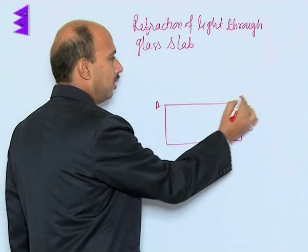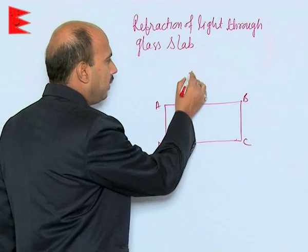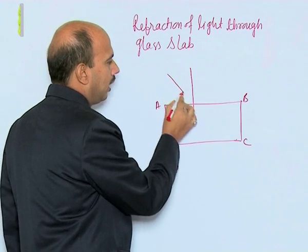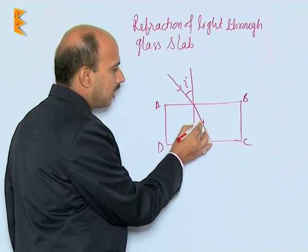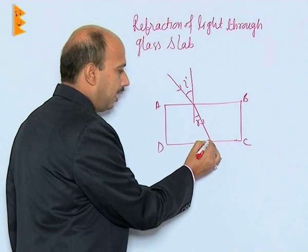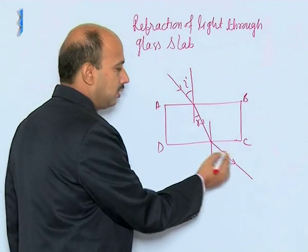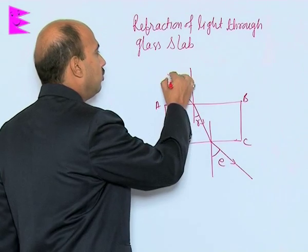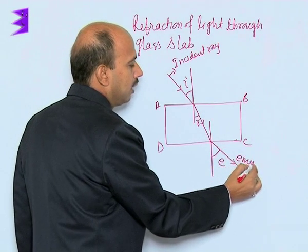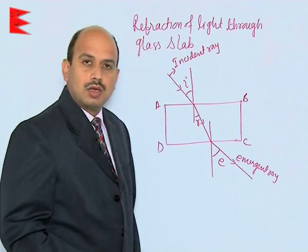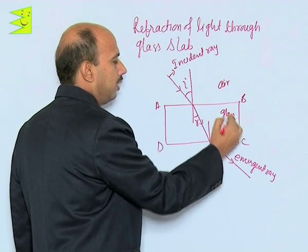Suppose the faces are labeled A, B, C, and D. There is an air-glass interface and a glass-air interface. We draw a normal at a point, mark the angle of incidence. This is the incident ray, and after refraction the ray bends — this angle is called the angle of refraction R. At the other face, we draw a normal and identify the emergent ray and the angle of emergence. So this is the incident ray and this is the emergent ray. Here we have air, then glass, and then air again.